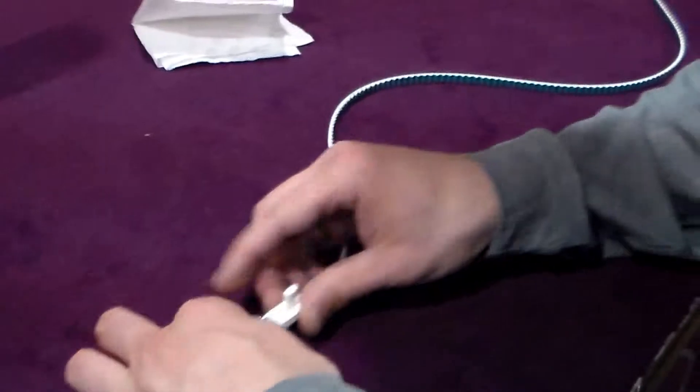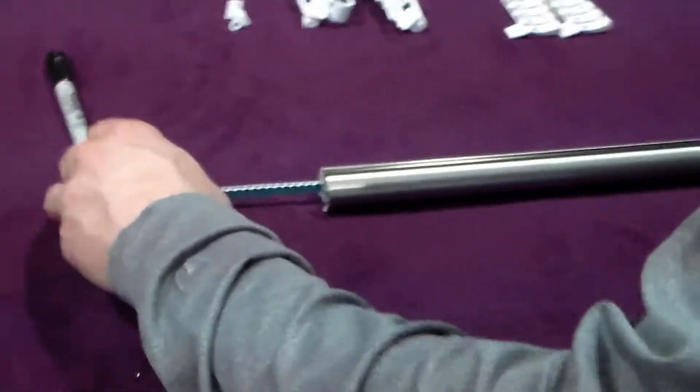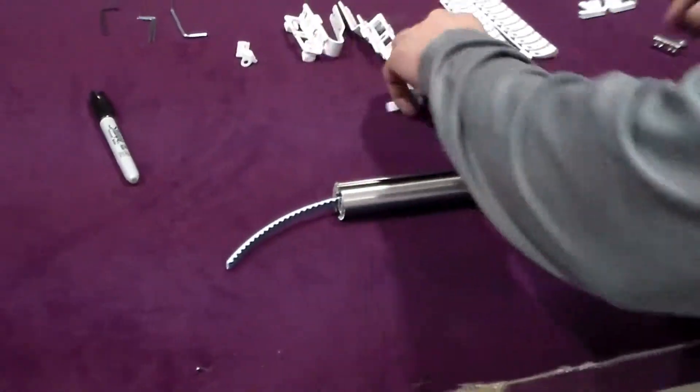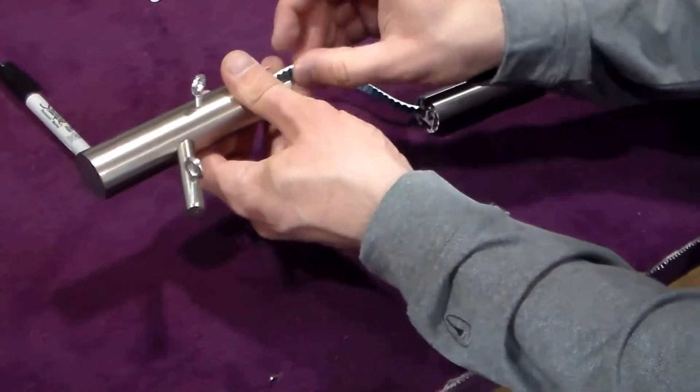Now slide the belt connector all the way through the rail to the opposite end, remove the belt connector and feed your belt through your return pulley.